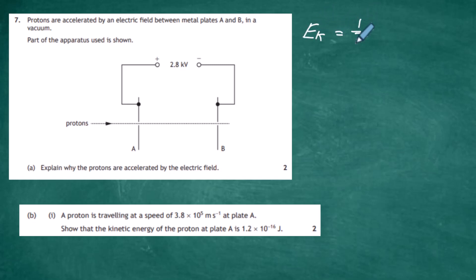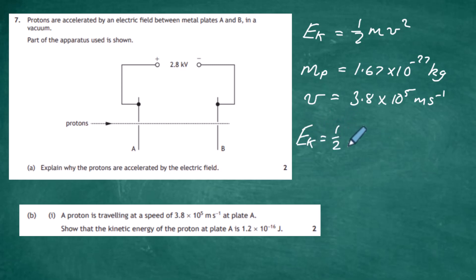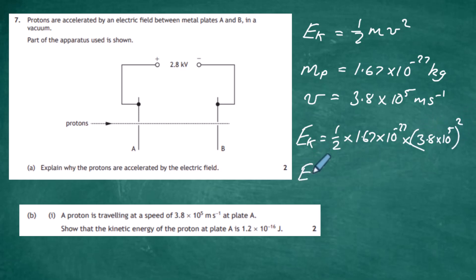The mass of the proton is 1.67×10⁻²⁷ kilograms, and we're told the speed v is 3.8×10⁵ meters per second. We can ignore any relativistic effects. So Ek = ½ × 1.67×10⁻²⁷ × (3.8×10⁵)², and don't forget to square the speed. Working this out on your calculator gives a kinetic energy of 1.2×10⁻¹⁶ joules, which is what we've been asked to show.